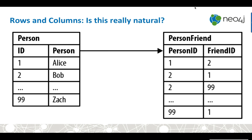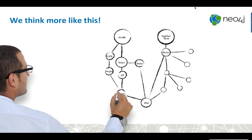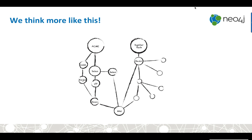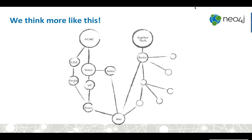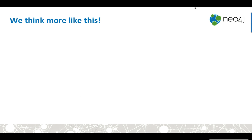The first thing I want to talk about is the graph data model. How many of you use relational databases on a regular day? Relational databases store data as columns and rows, and most other database technologies do the same. But it's not really a natural way to think about your data. If you think about a person and a relationship between two people, in a relational database you'd have two tables — the person table and then the person-friend relationship table — with a mapping between different person IDs.